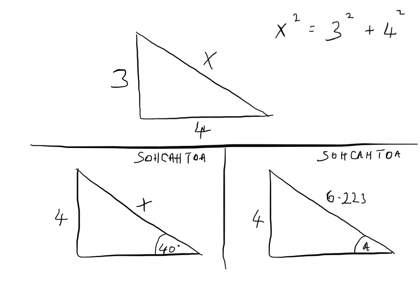I'll show you an example of solving that in just a moment. Now I'm going to talk about the other two types of problems. The second type is where you're given an angle and a side and you're asked to find another side. For this, what we need to use is sine, cos, and tan. So you have to be familiar with how to use sine, cos, and tan.